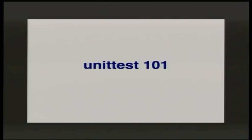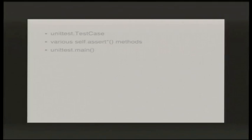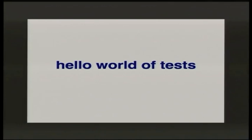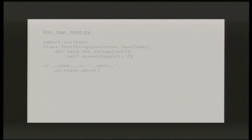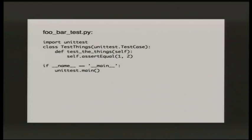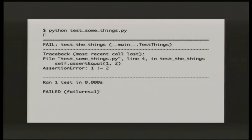unittest was added in Python 2.1 so it's probably available to you. I found three main components I needed: unittest.TestCase, various assert methods, and unittest.main. The hello world of tests: create a test directory, add a file called test.py, and put something very simple in it. You can see I've got all three things — a class that inherits from unittest.TestCase, an assert method for doing a test, and unittest.main under main to run the script.